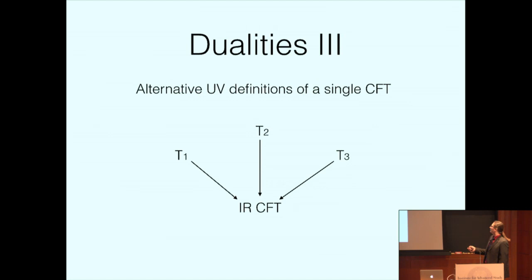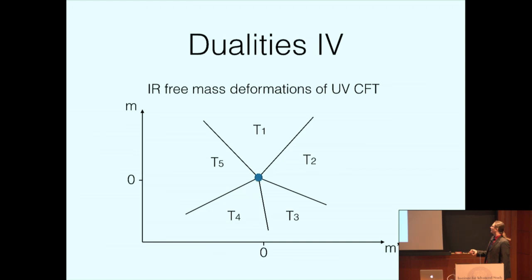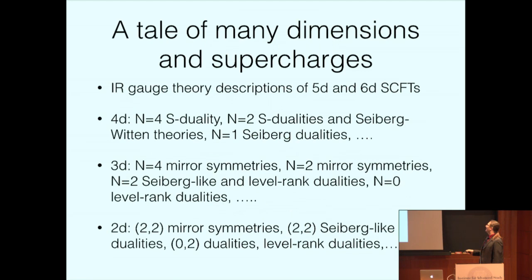We might be given some ultraviolet asymptotically free description of a theory and then an effective low energy description in terms of completely different degrees of freedom. We might have infrared dualities where several different UV definitions flow to the same CFT, shedding light on different aspects of a strongly coupled quantum field theory. Or the mysterious CFT lives in the UV, possesses relevant deformations, and we're given a description of its phase diagram. Nati has given us dualities of all of these types.